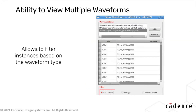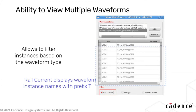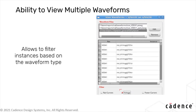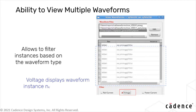When rail current is selected, the form displays waveform instance names with prefix TC. Similarly, when voltage is selected, the form displays waveform instance names with suffix IR.